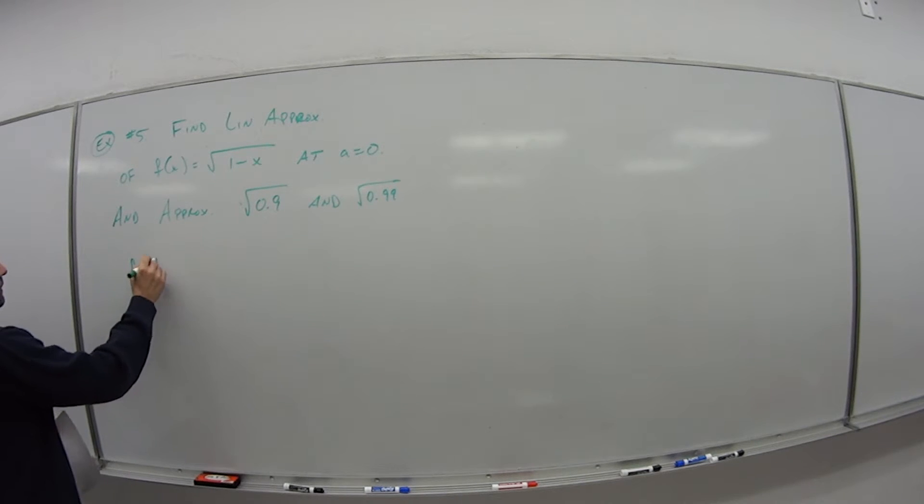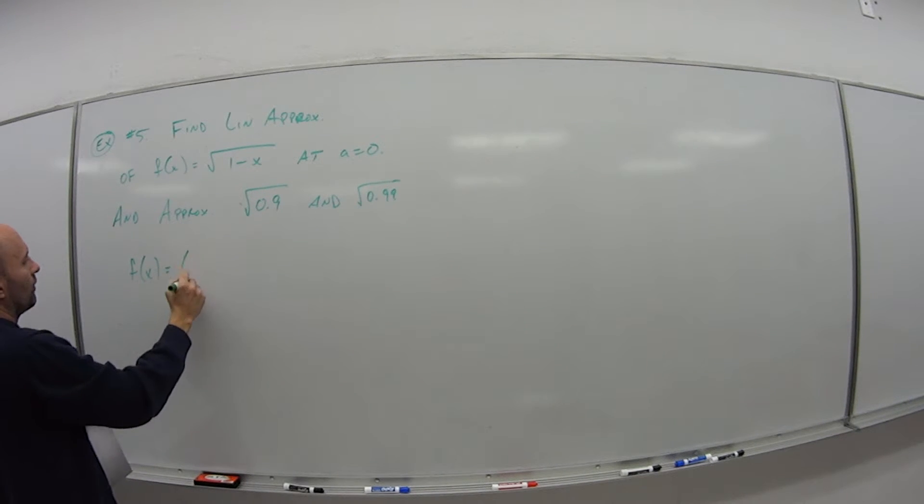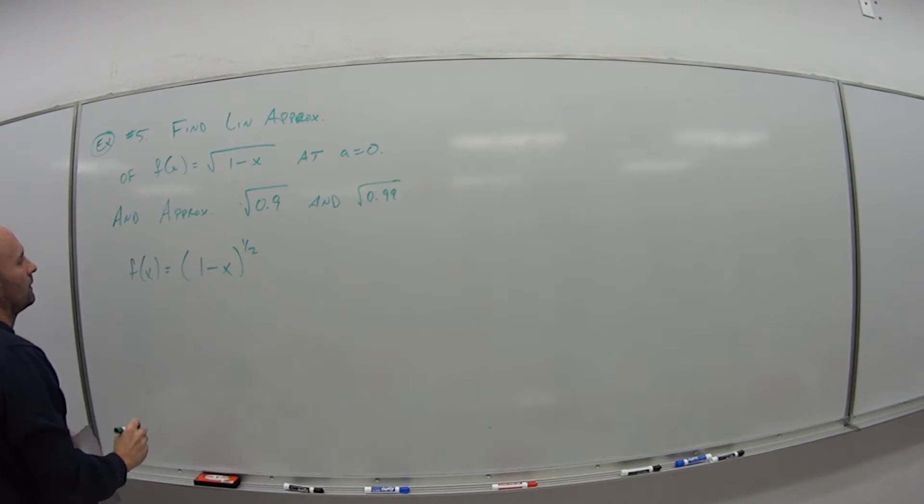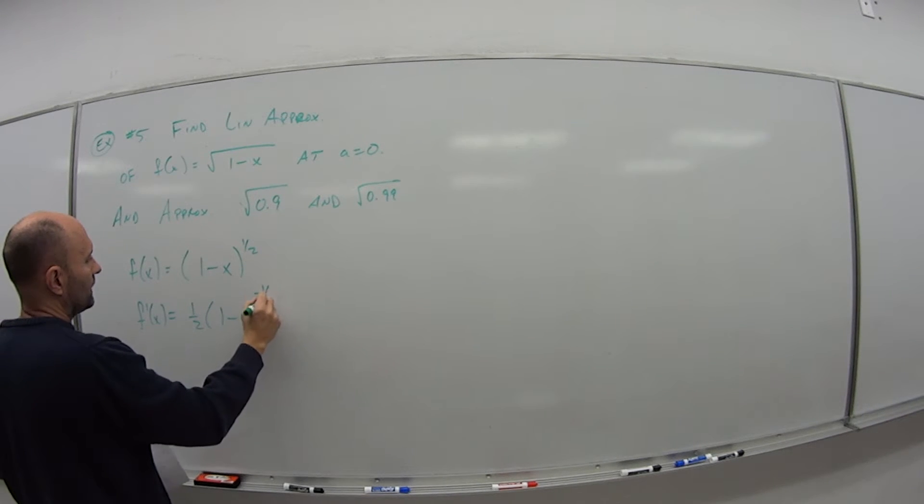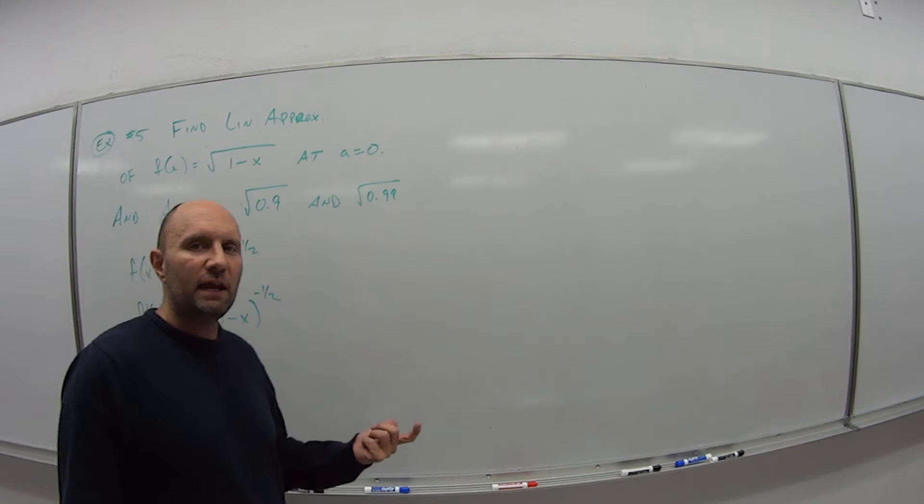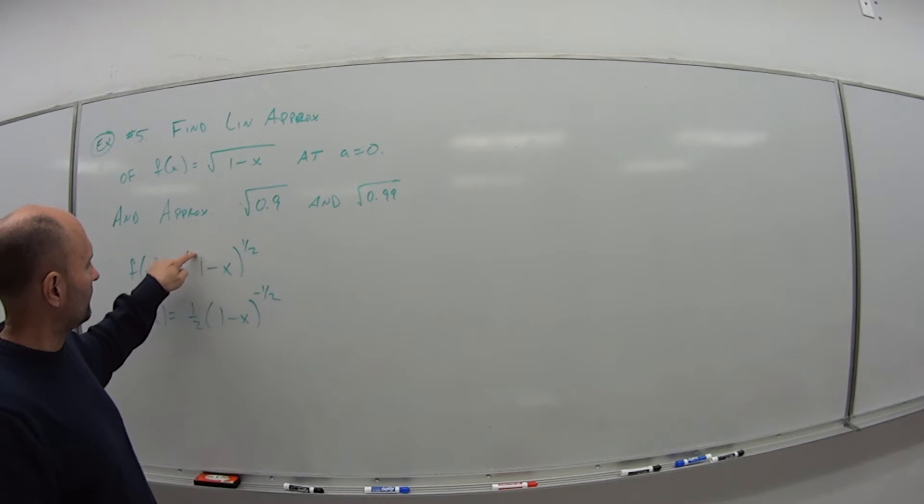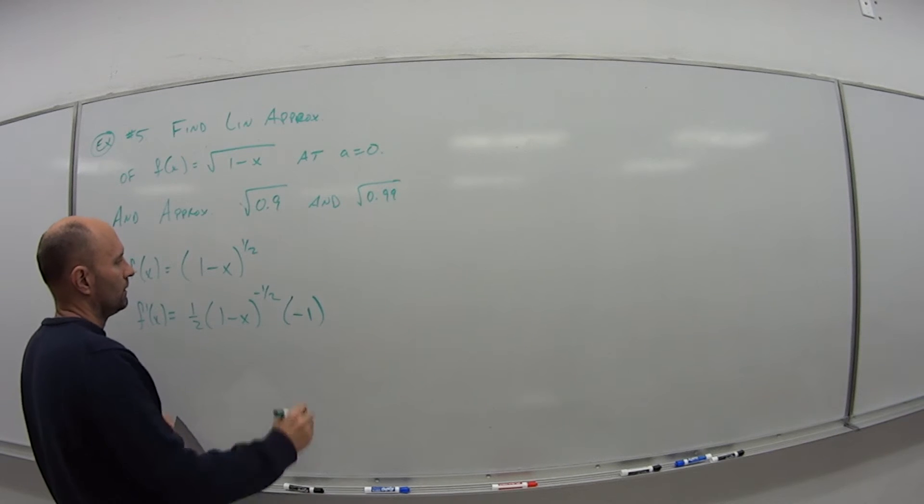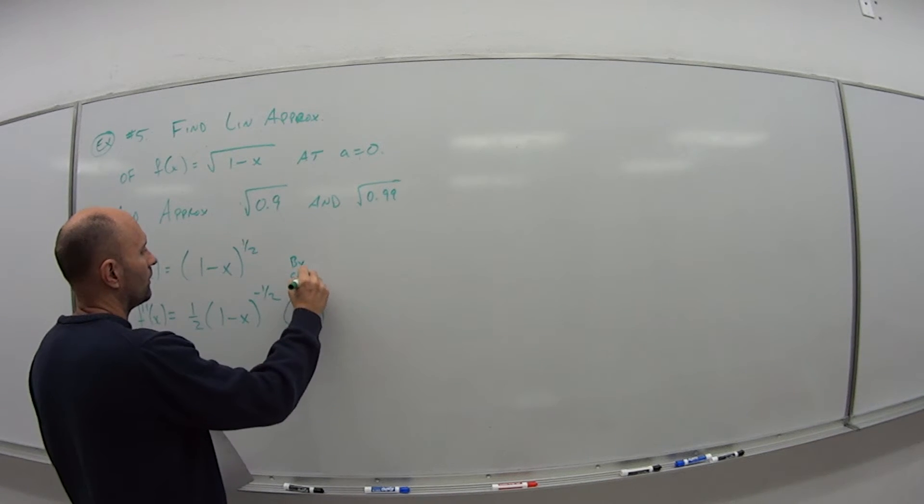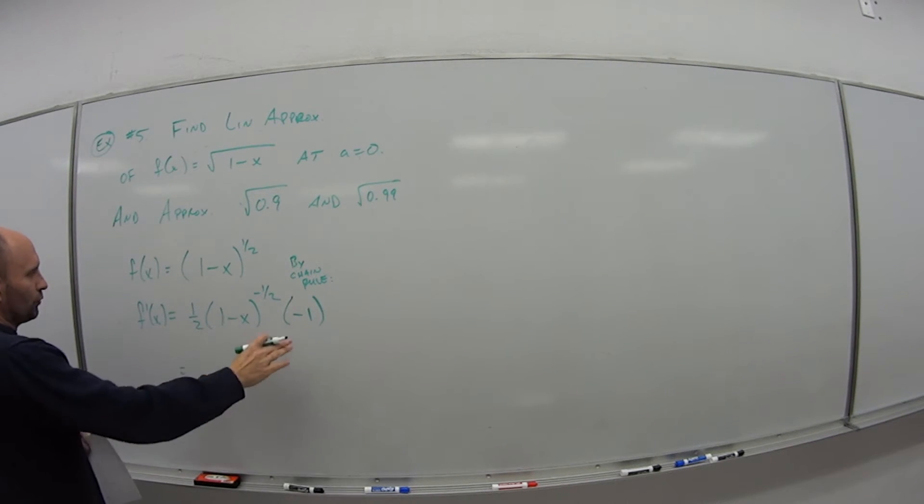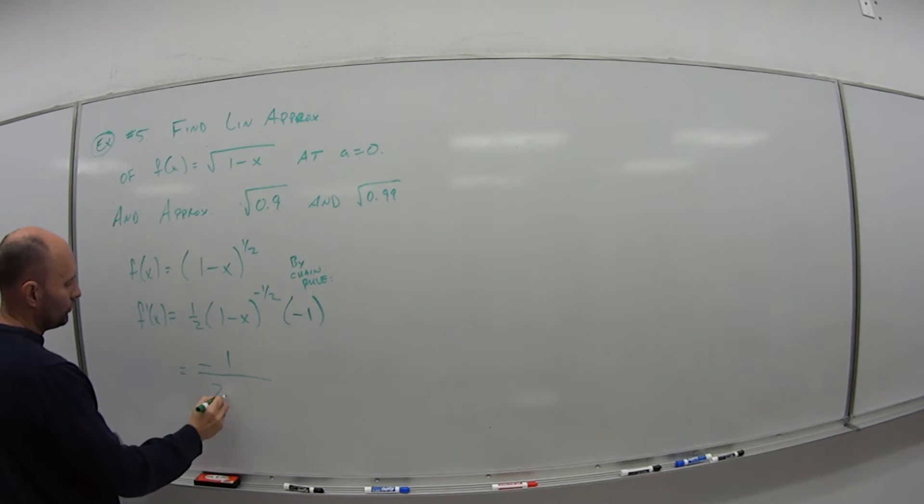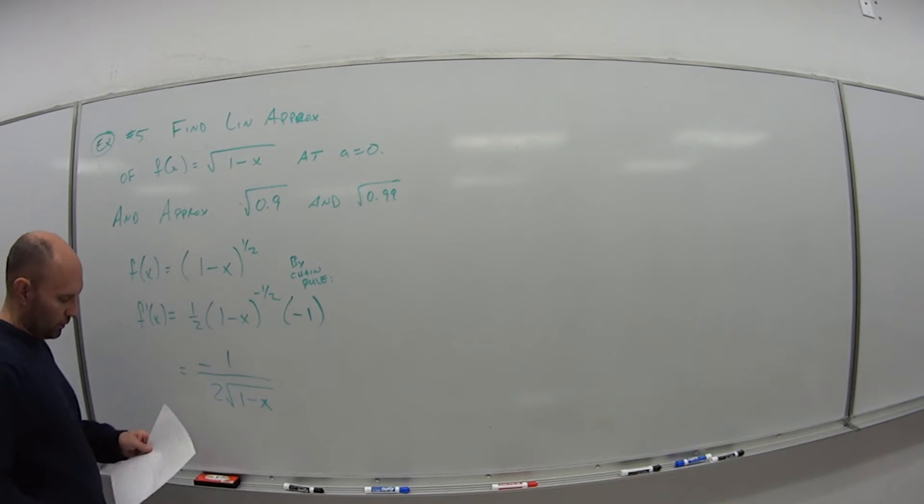So the first thing we do is I'm going to convert this f of x into exponents, so I'm able to take the derivative. So the derivative of f of x is what? Bring down the half, rewrite what's inside, subtract 1 from the exponent. But here we have to apply the chain rule, right? Why? Because inside I have 1 minus x. So I have to take the derivative of what's inside, which is what? Minus 1. Again, this is by the chain rule. That's how I get that minus 1. So this derivative is negative 1 over 2 times the square root of 1 minus x.